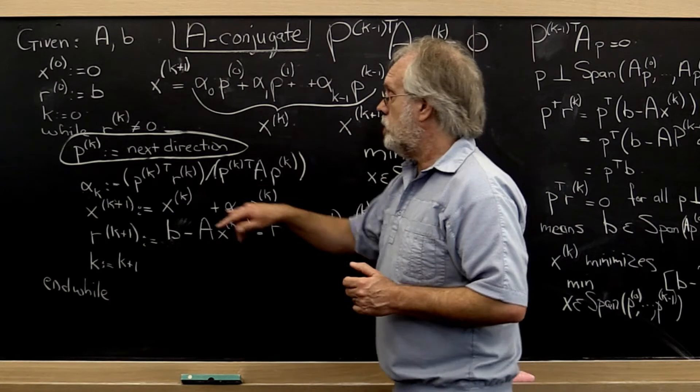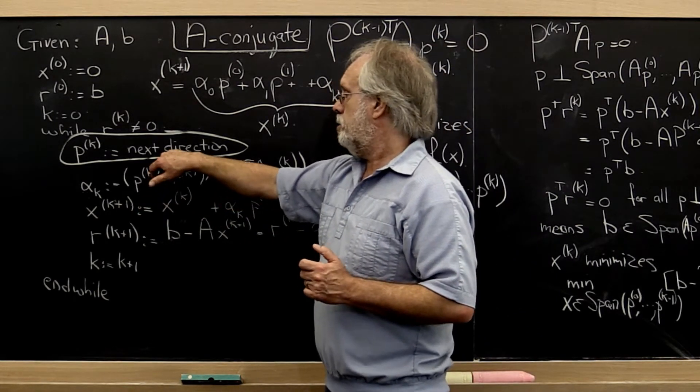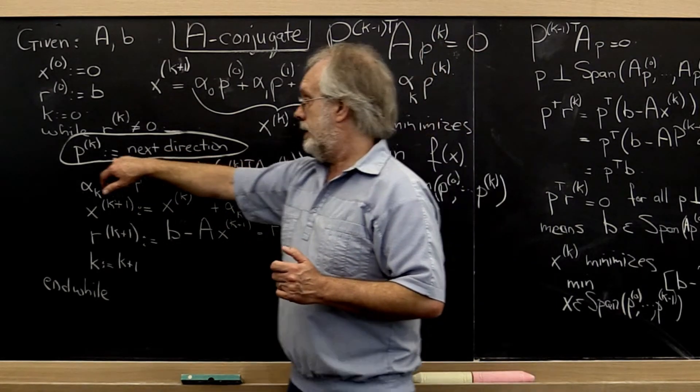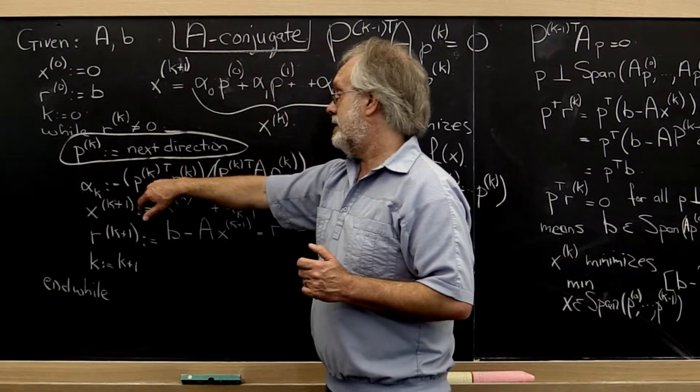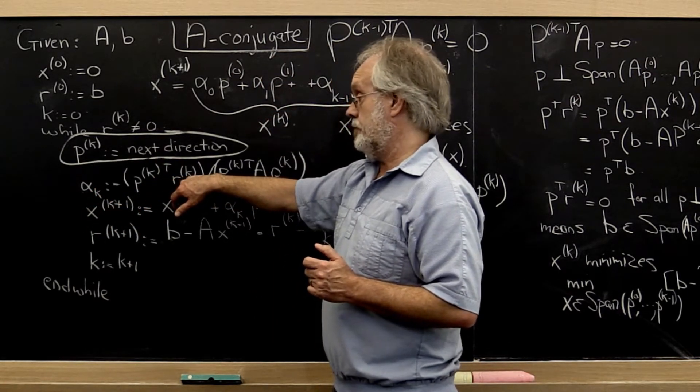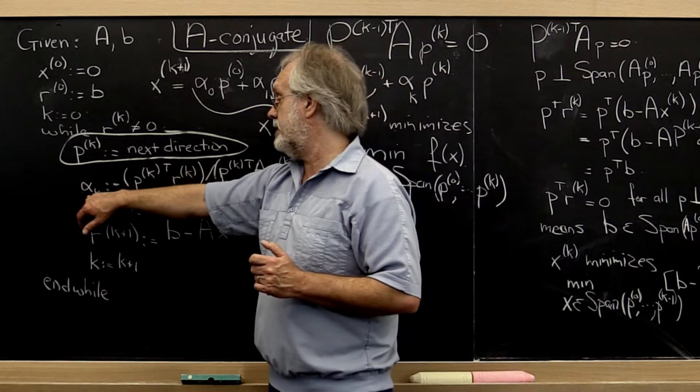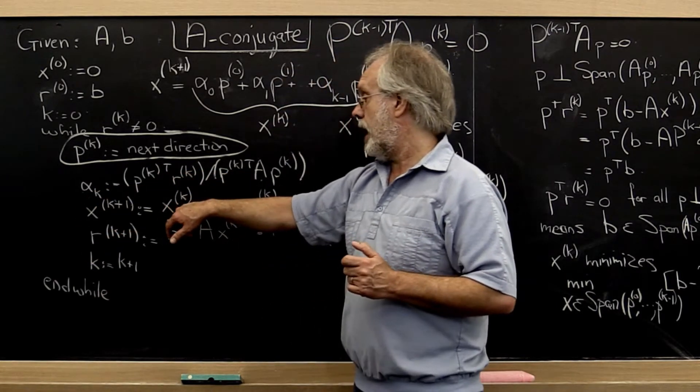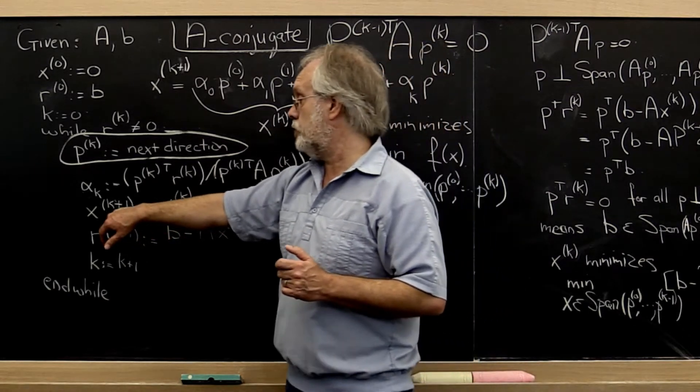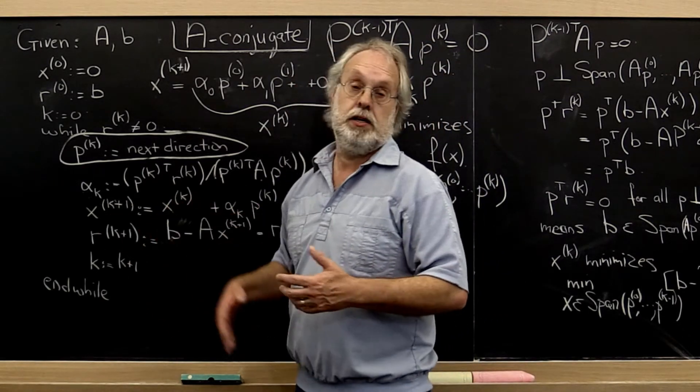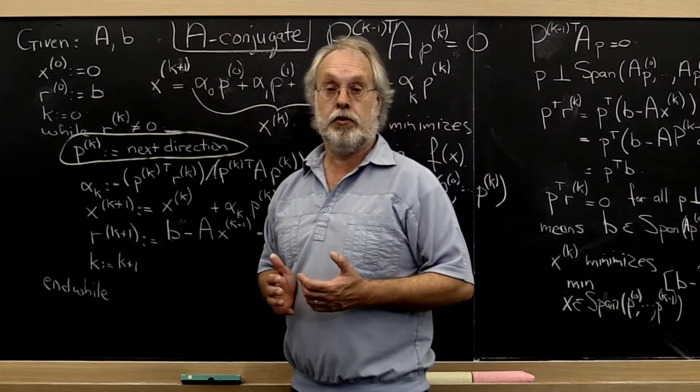But notice that we cannot pick a search direction such that it is orthogonal to the current residual. Because if we do, then this alpha k is equal to zero and therefore our next guess is just equal to our current guess and therefore we're not making any progress in this step.